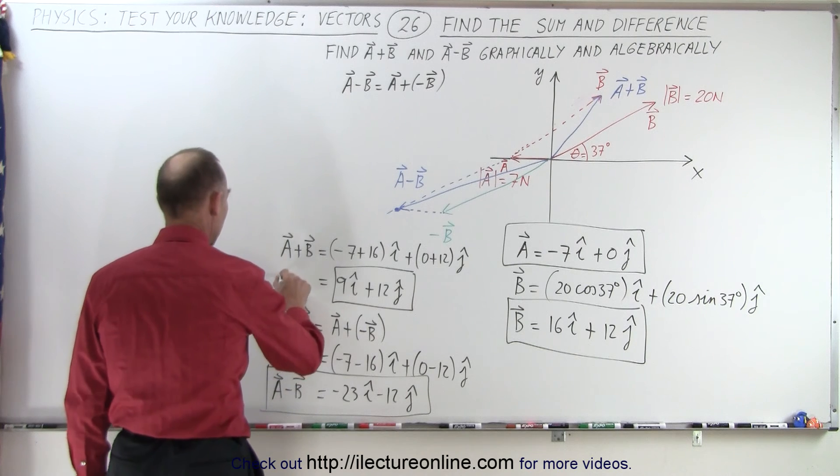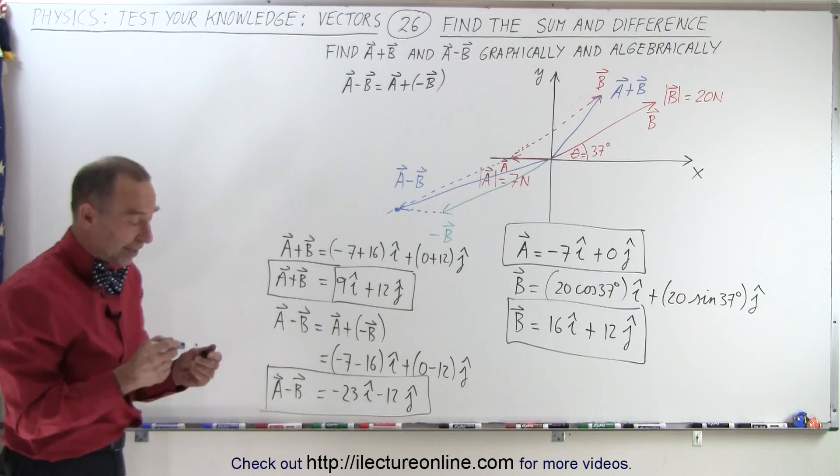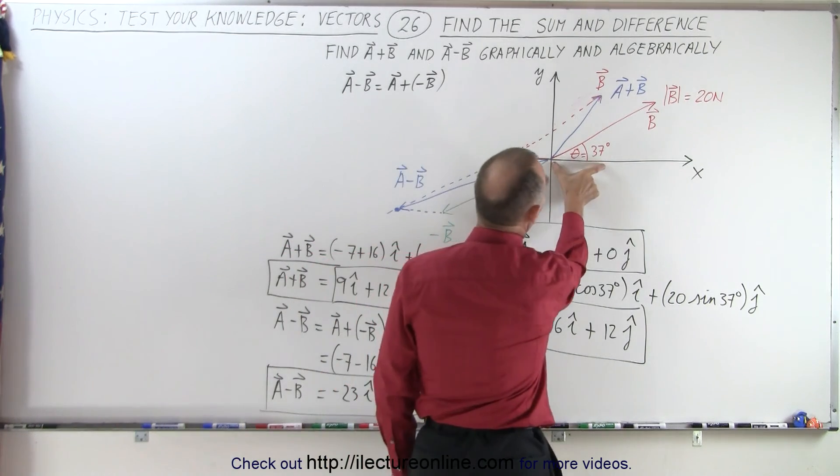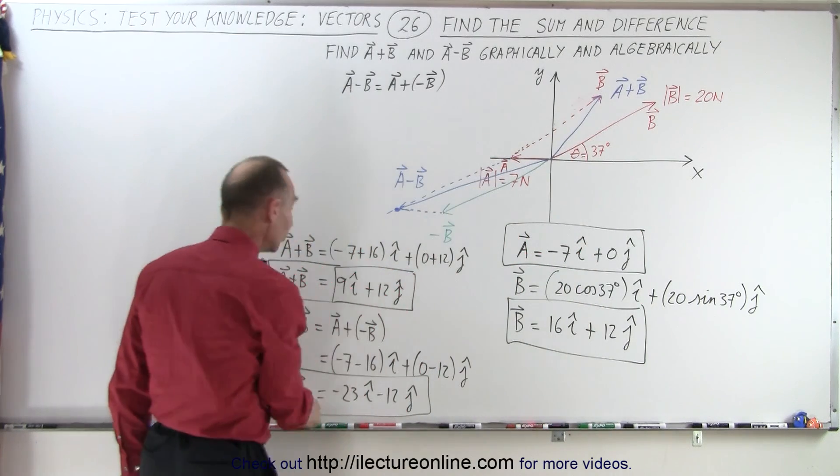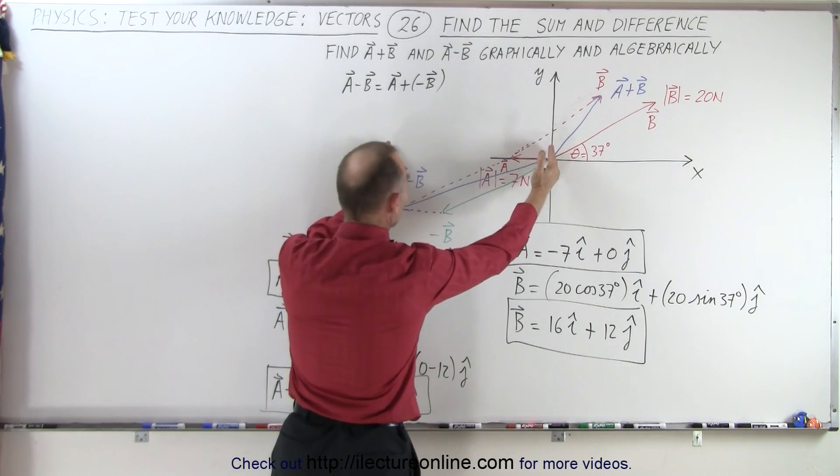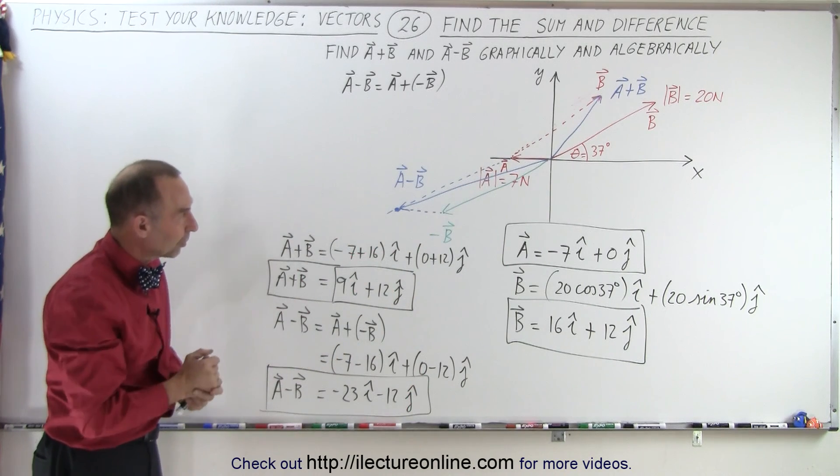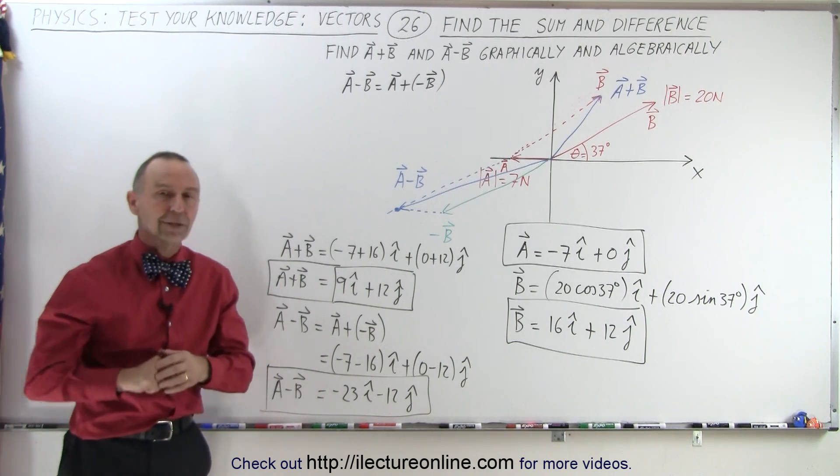Now let's see if that makes sense graphically. Notice we have plus 9I plus 12J. So 9I plus 12J, that looks about right. And on the A minus B, we have minus 23 in the I direction, minus 12 in the J direction. That looks about right as well. So the graphical result looks very similar to what we'd expect with the analytical result. And that is how it's done.